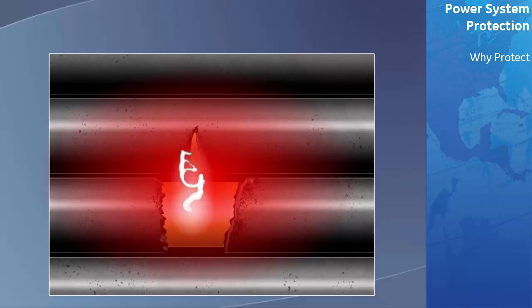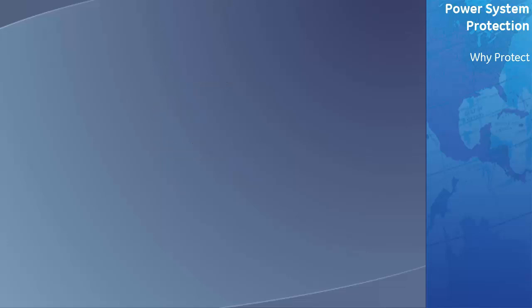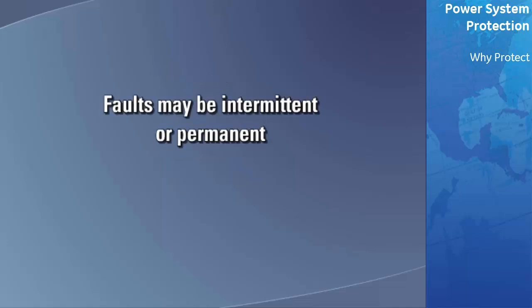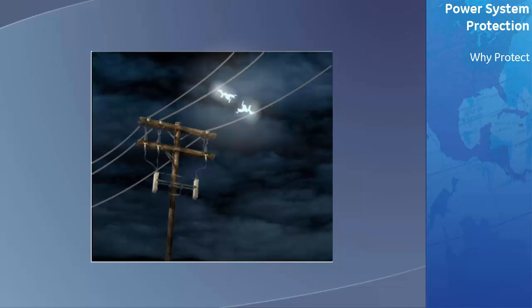There are many causes of power system faults — lightning, wind, and ice and snow, just to mention a few. The protective system must be able to sense the fault and take appropriate action within a time frame necessary to minimize damage. Faults may be intermittent or permanent in nature. Lightning striking the transmission line or a strong wind causing two phases of the transmission line to touch and form an arc are common causes of an intermittent fault to an overhead transmission line.